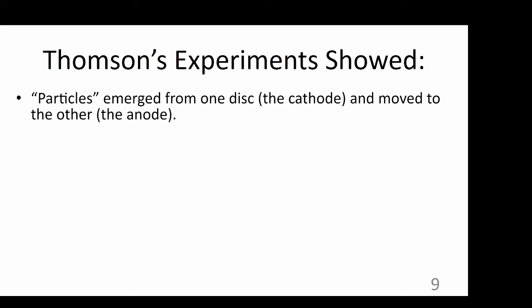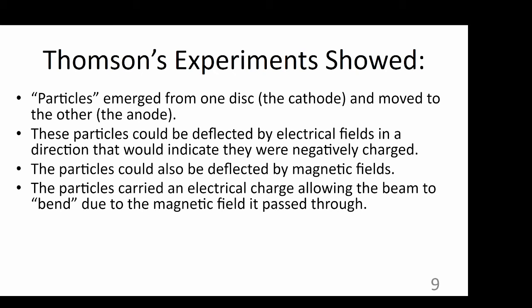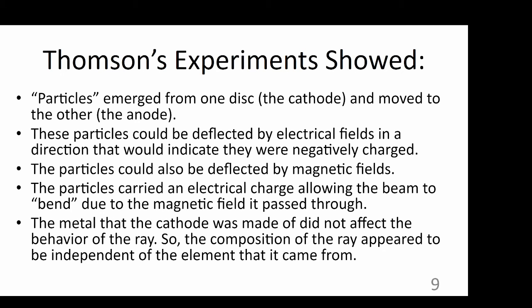Essentially, Thompson's experiment showed that particles emerged from one disk, the cathode, and moved to the other disk, the anode. These particles could be deflected by electrical fields in a direction that would indicate that they were negatively charged. The particles could also be deflected by magnetic fields. The particles carried an electrical charge, allowing the beam to bend due to the magnetic field that it passed through. And the metal that the cathode was made of did not affect the behavior of the ray, so the composition of the ray appeared to be independent of the element that it came from. Since the particles always had the same mass-to-charge ratio, Thompson concluded that whatever made up the beams must exist in all atoms, and therefore atoms must be divisible.